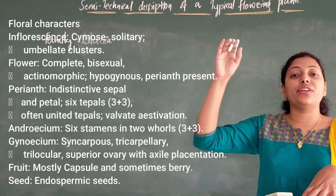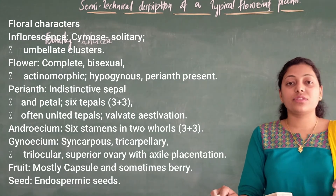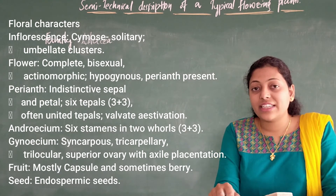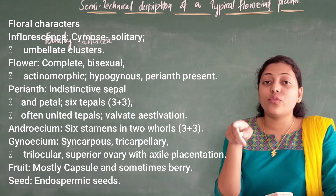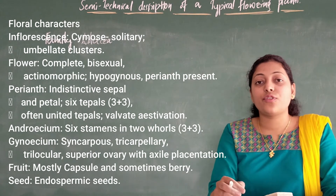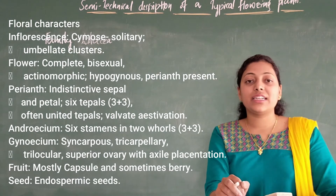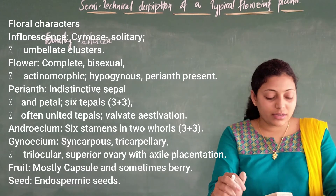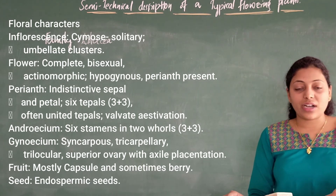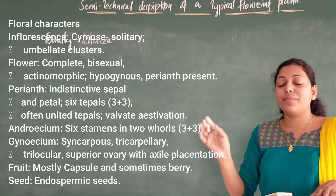Ovary is superior — the line is drawn below G. Trilocular with many ovules. Axile placentation — the ovary is divided into an axis and around this axis the placenta is formed, with ovules growing around the placenta. The fruits are capsule or berry — endospermous. Now let's look at who has given the floral formula clearly: actinomorphic, bisexual, P 3+3 (perianth united), A 3+3, G with superior ovary — tricarpellary, syncarpous, with a bracteate condition.